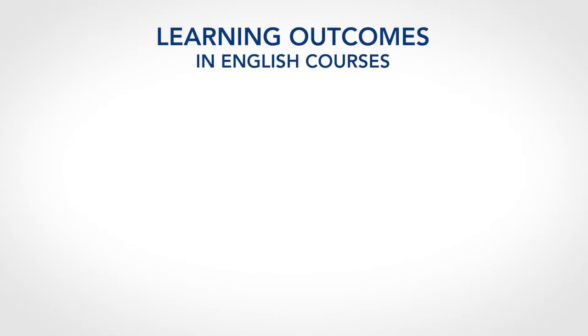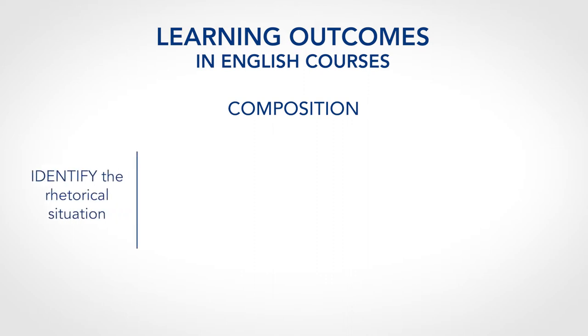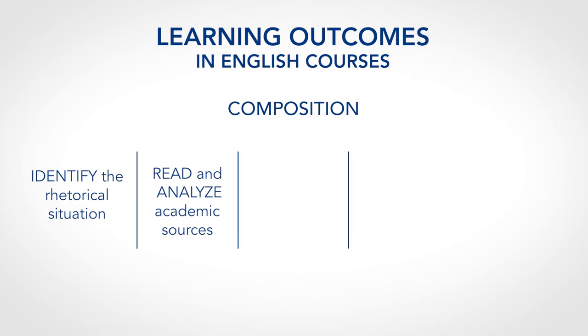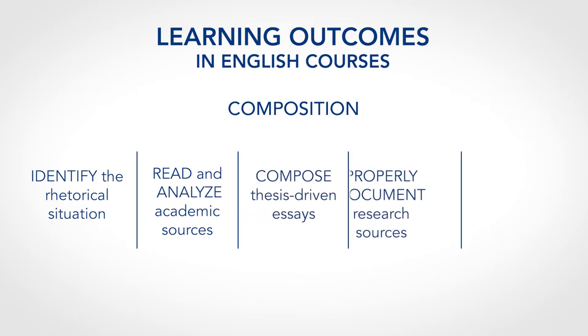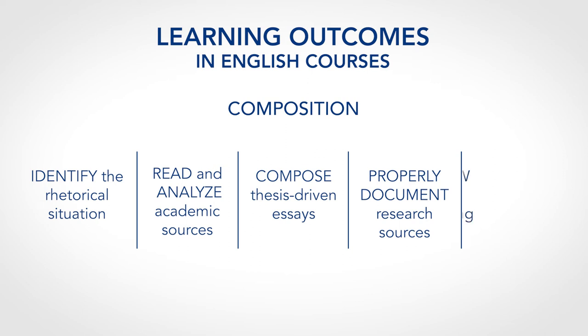Here's a little secret — they're just as important, if not more important, than the grade. Here are some examples of syllabus learning outcomes for English classes. In a composition class, you might find that you have to identify the rhetorical situation, read and analyze academic sources, compose thesis-driven essays, employ appropriate documentation to support research-based essays, and follow the conventions of MLA documentation.